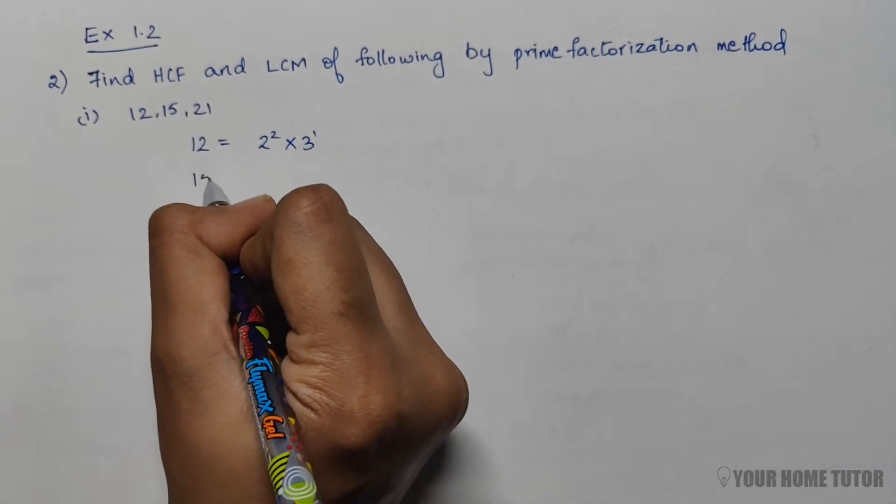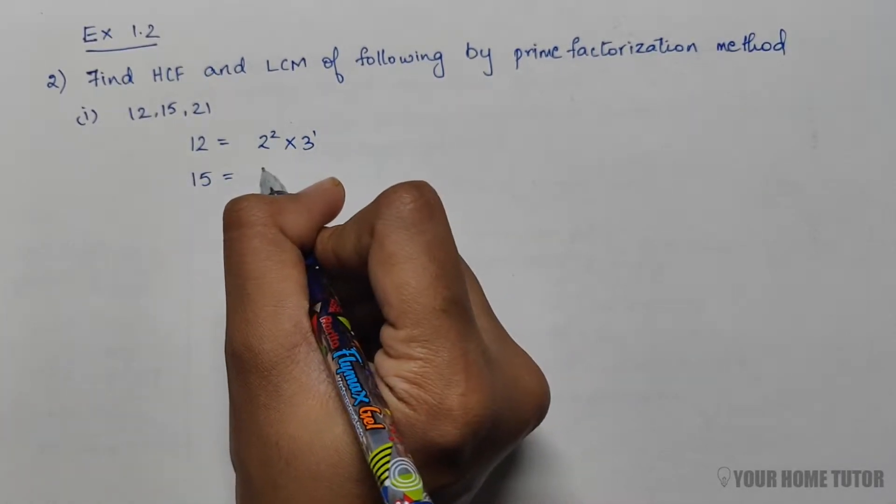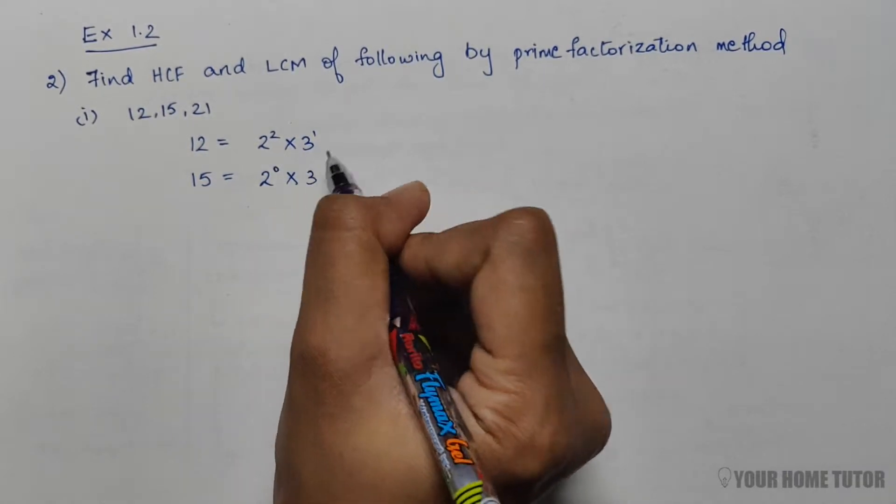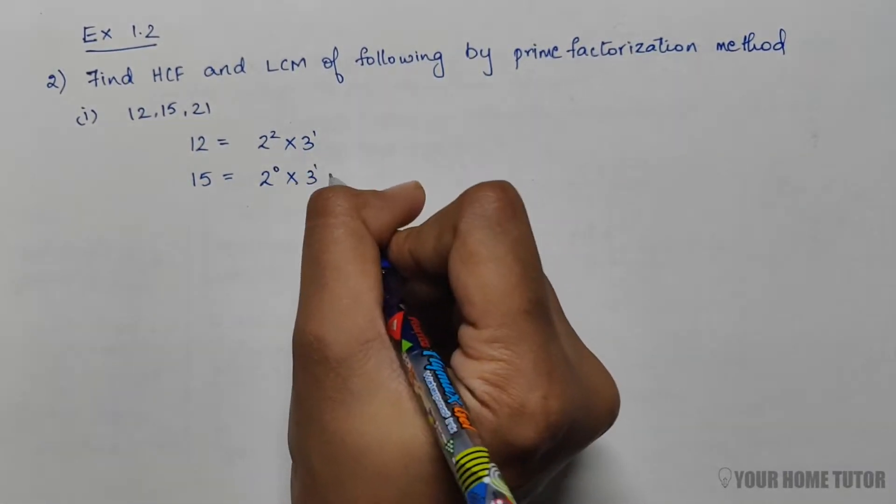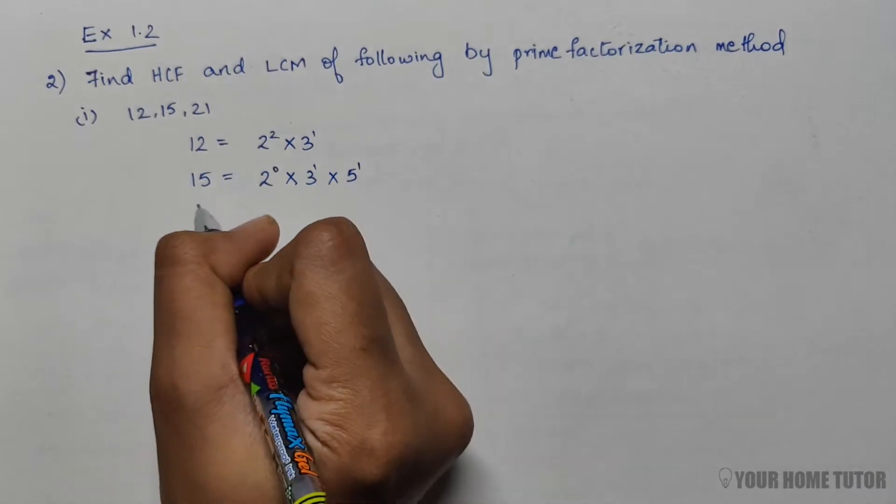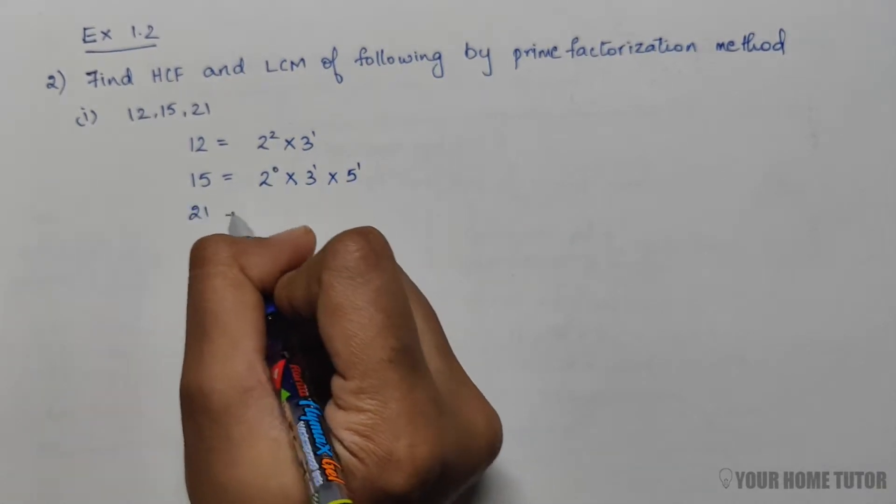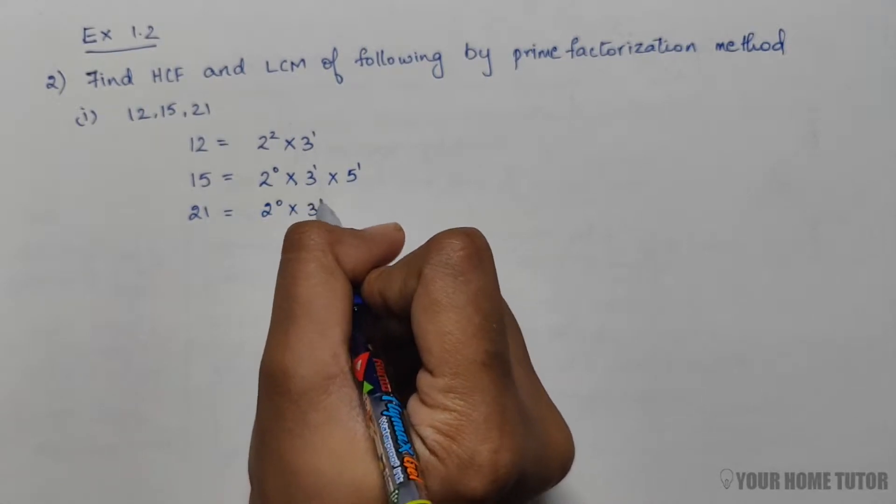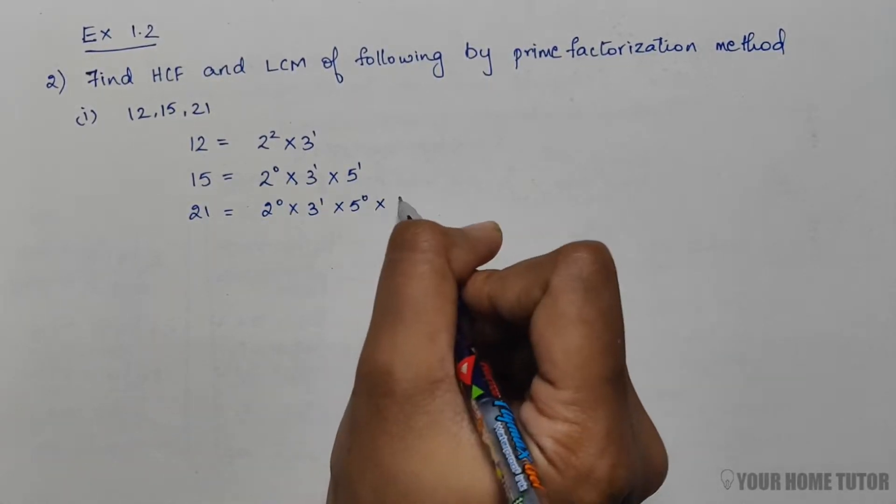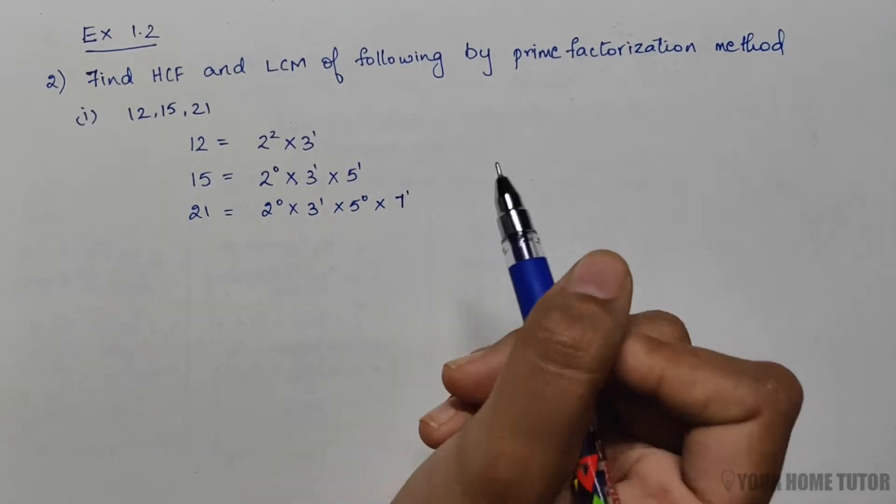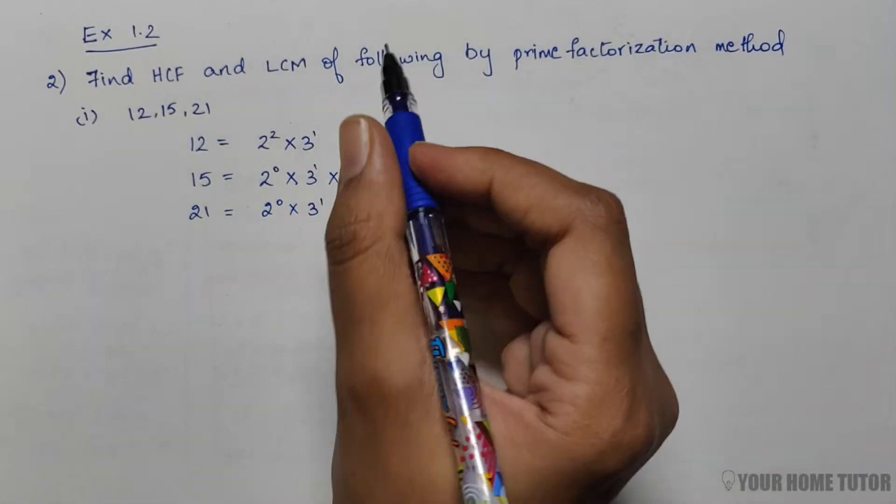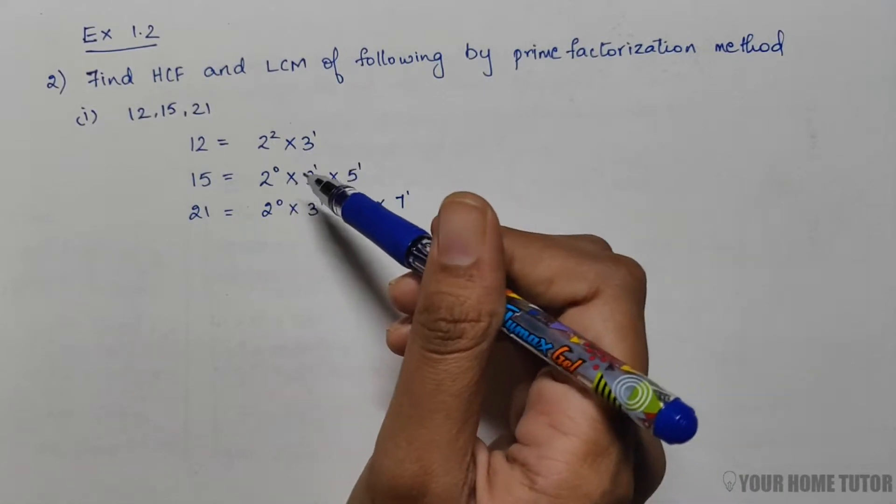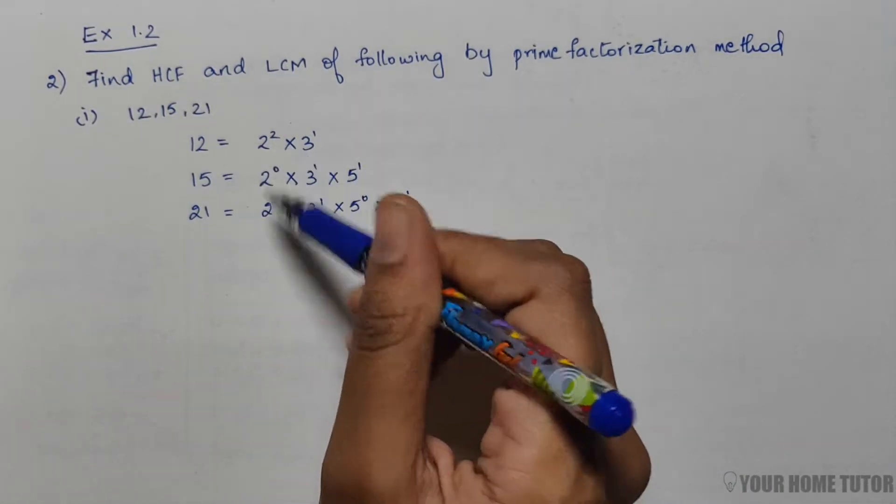For 15: 2⁰ × 3¹ × 5¹. For 21: 2⁰ × 3¹ × 5⁰ × 7¹. So the prime numbers which we can see in these three are 2, 3, 5, and 7.